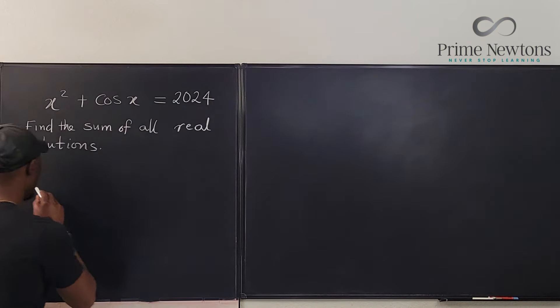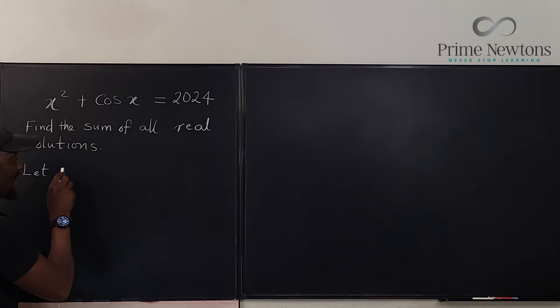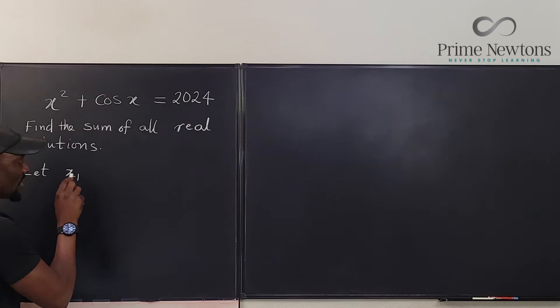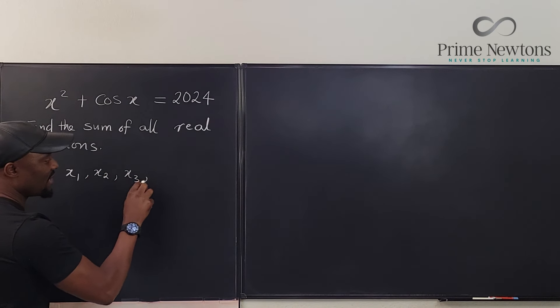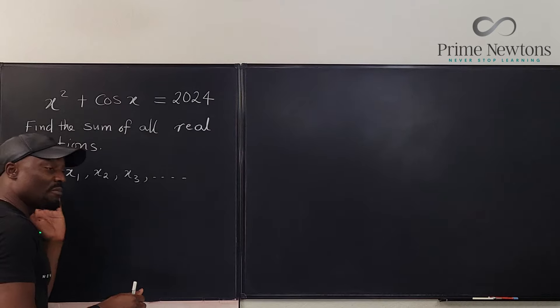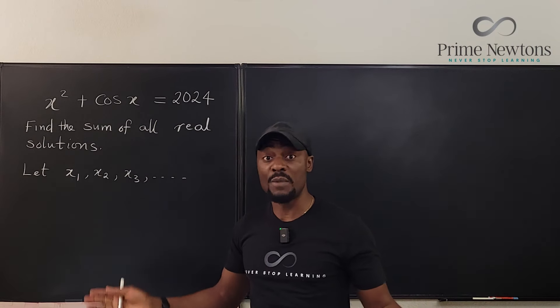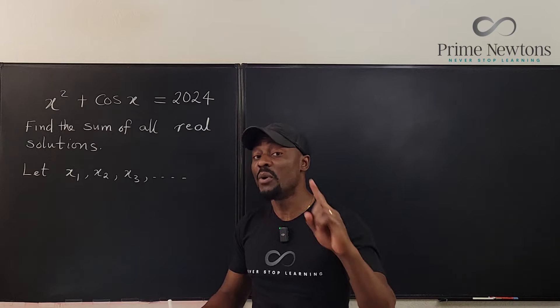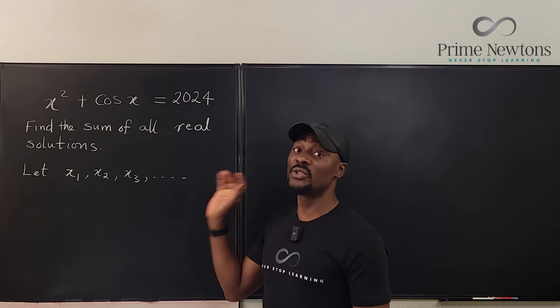This means that if x, let's call it x1, x2, x3, let's just say we have a bunch of x's that will solve this equation. We don't know how many solutions it's going to have. But one thing we know is that if we solve this equation, we're going to have a bunch of solutions, x1, x2, x3, as many as it can be.